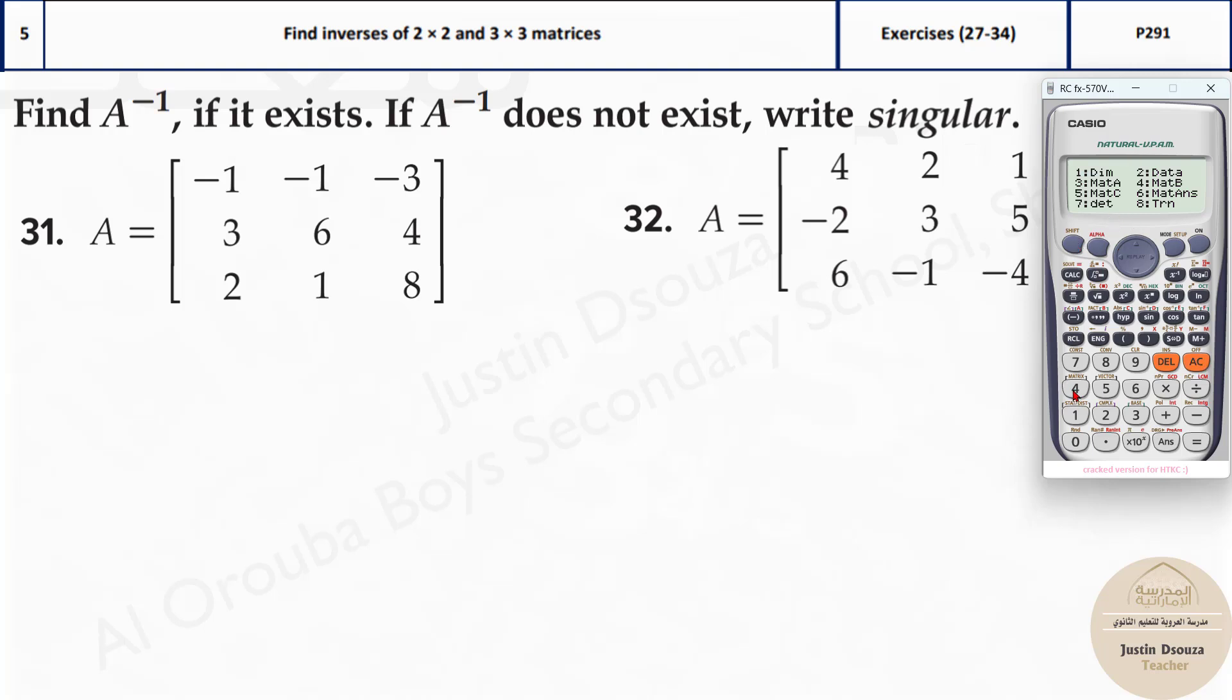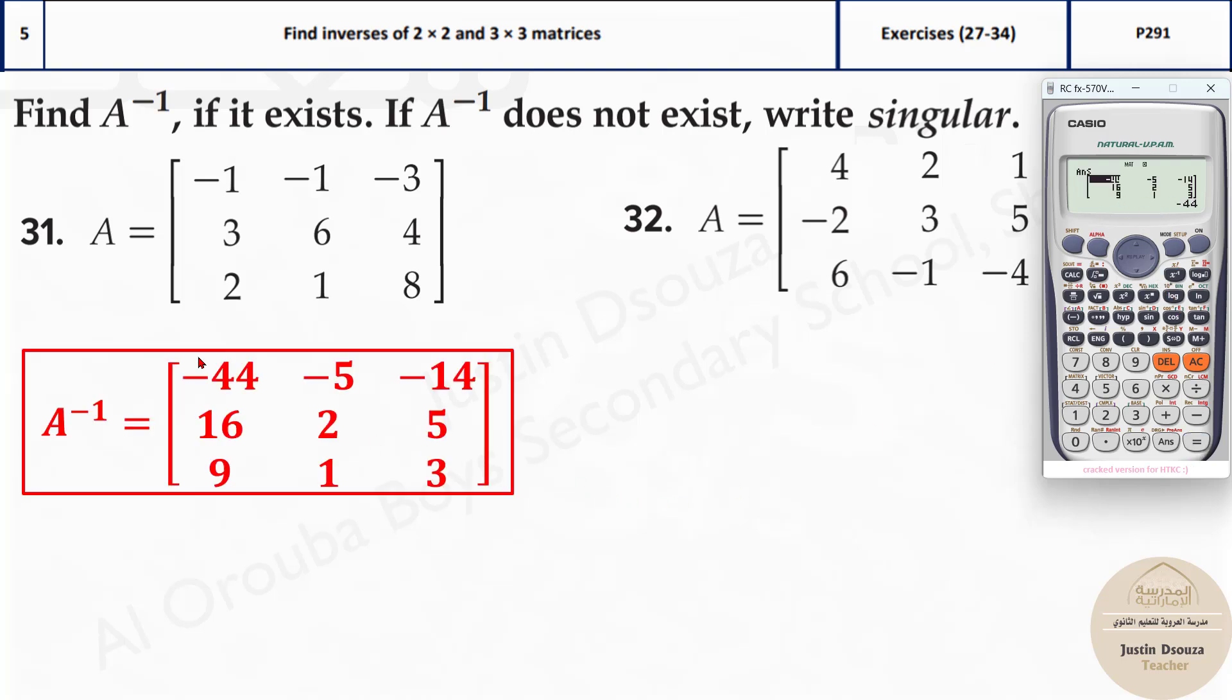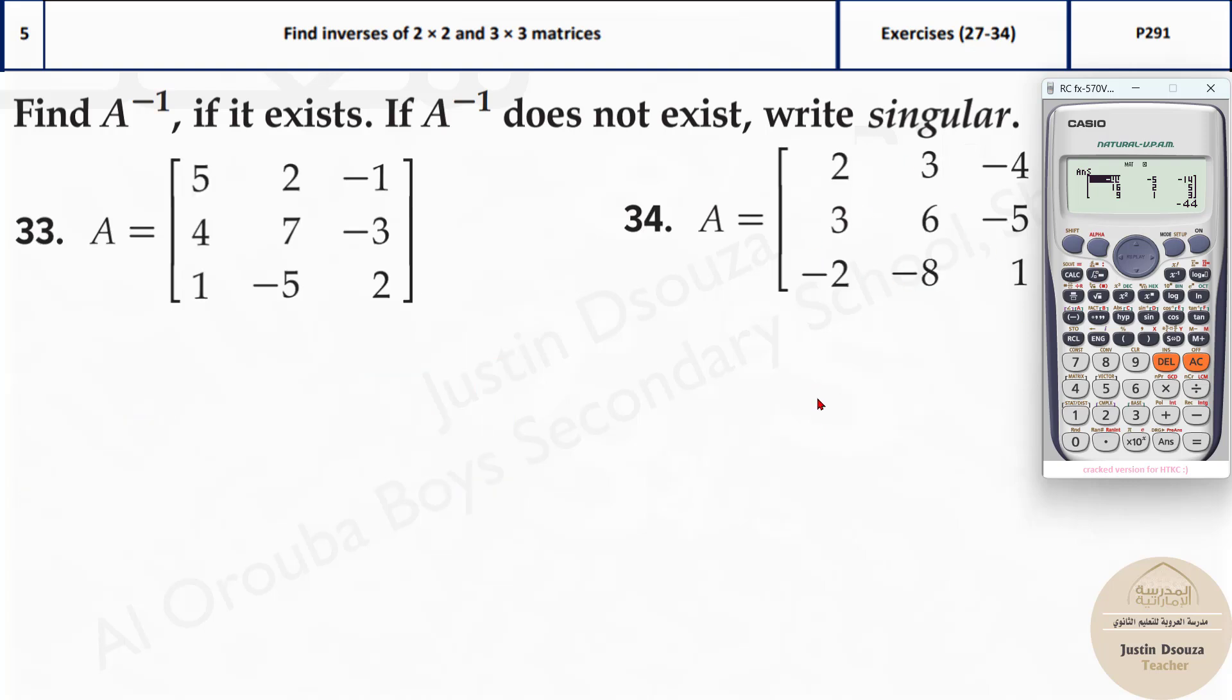Now here what you do is shift 4, put in the matrix A, inverse, this must be the answer. You can see here it's negative 44, negative 5, we can match the answer. Here this one, the determinant is 0, so it's a singular matrix.